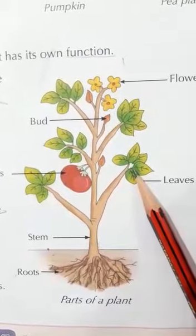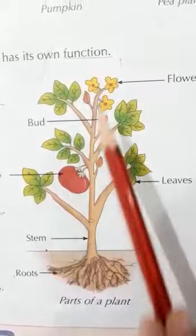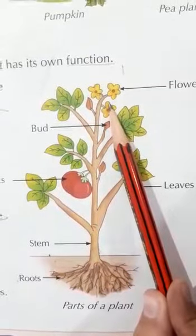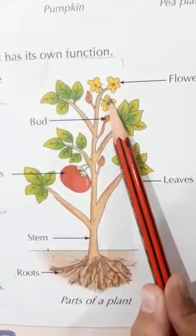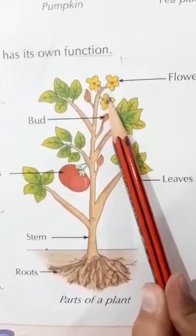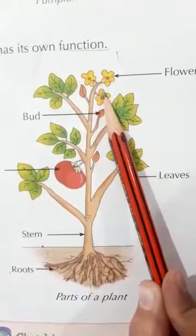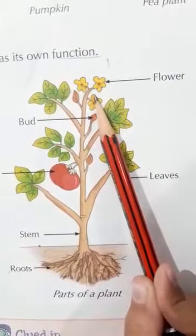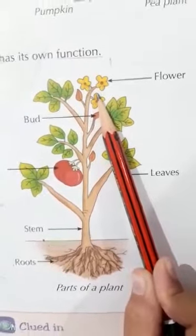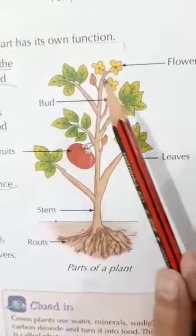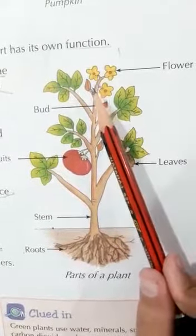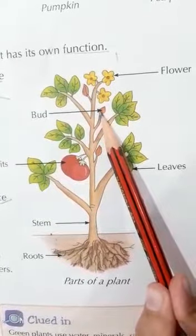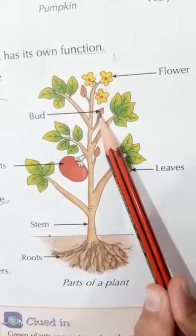Flowers have different sizes, shapes, colors and scents. They grow from buds. Some flowers change into fruit.